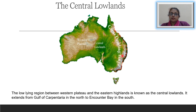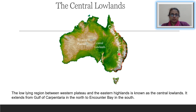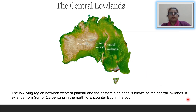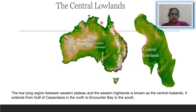Now let us learn about the Central Lowlands. The Central Lowlands is a low-lying region between the Western Plateau and the Eastern Highlands, that is the Great Dividing Range. It extends from the Gulf of Carpentaria in the north to Encounter Bay in the south.